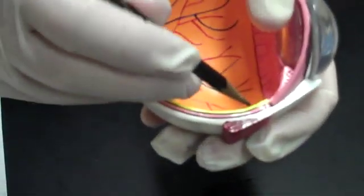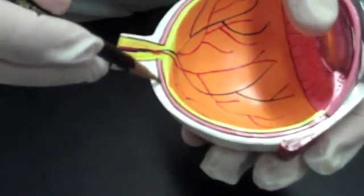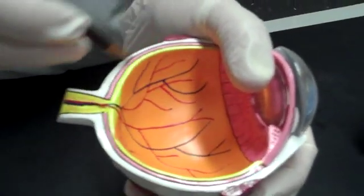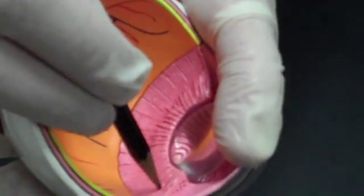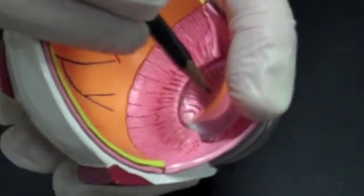The choroid is this pink layer in here. It's in between the sclera and the retina. The ciliary body is this part here that stretches the lens.